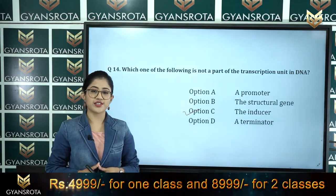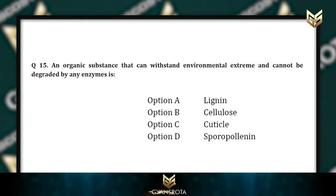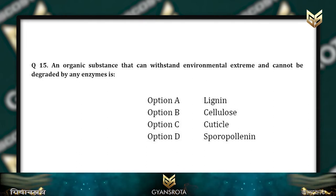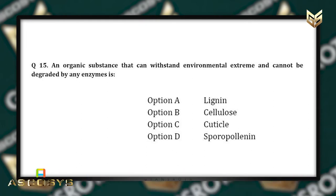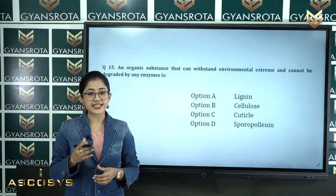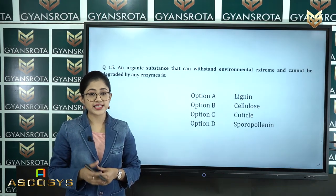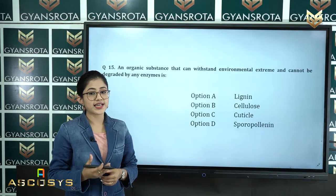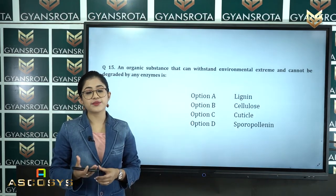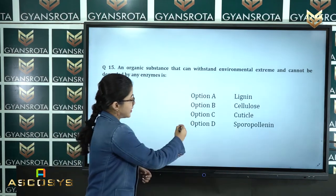Question number 15: An organic substance that can withstand environmental extremes and cannot be degraded by any enzyme is — option A lignin, option B cellulose, option C cuticle, option D sporopollenin. This comes directly from the NCERT textbook chapter Sexual Reproduction in Flowering Plants. The answer is sporopollenin, so option D is the correct answer.